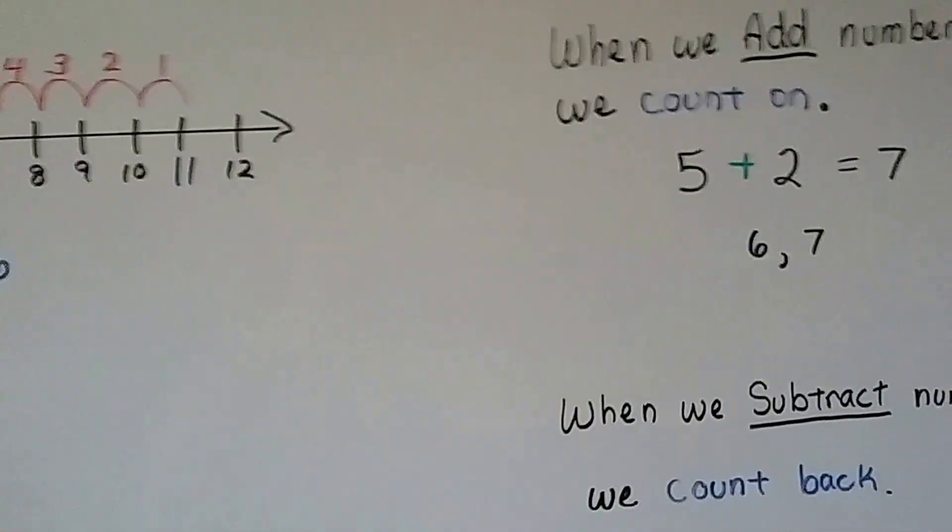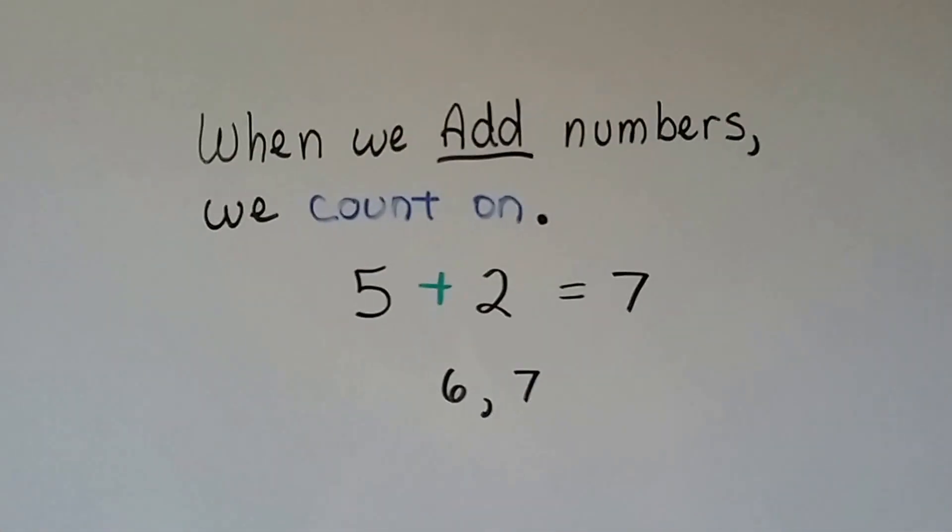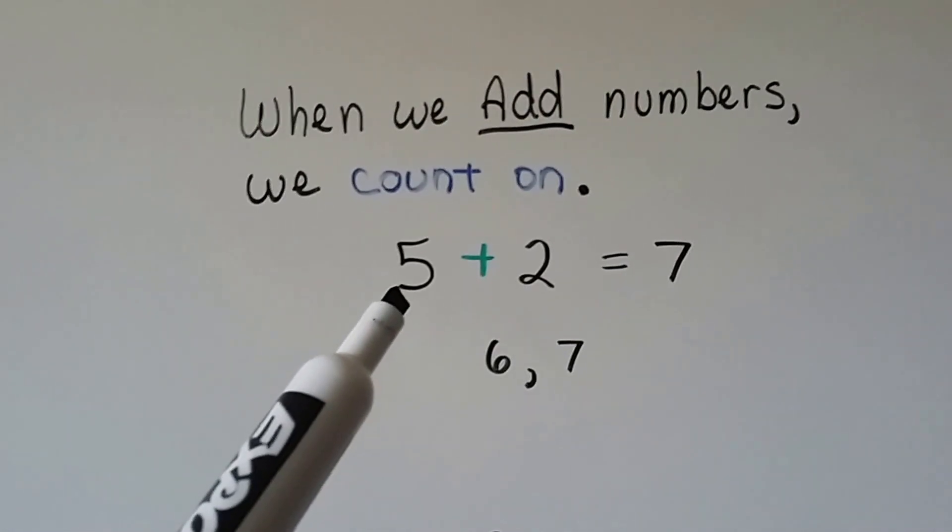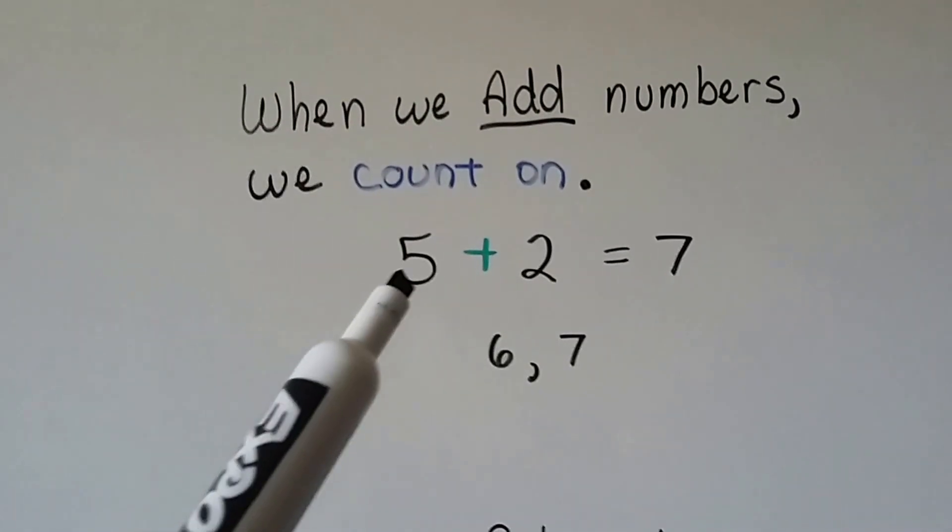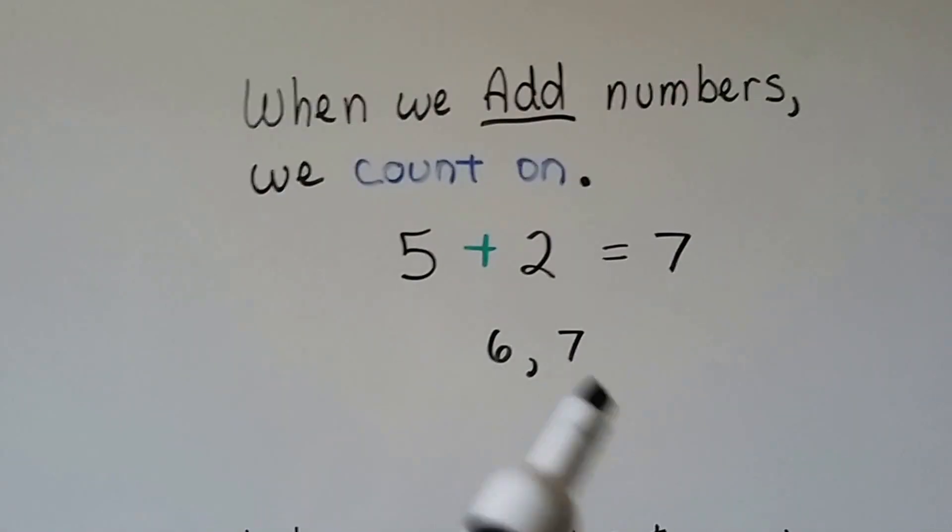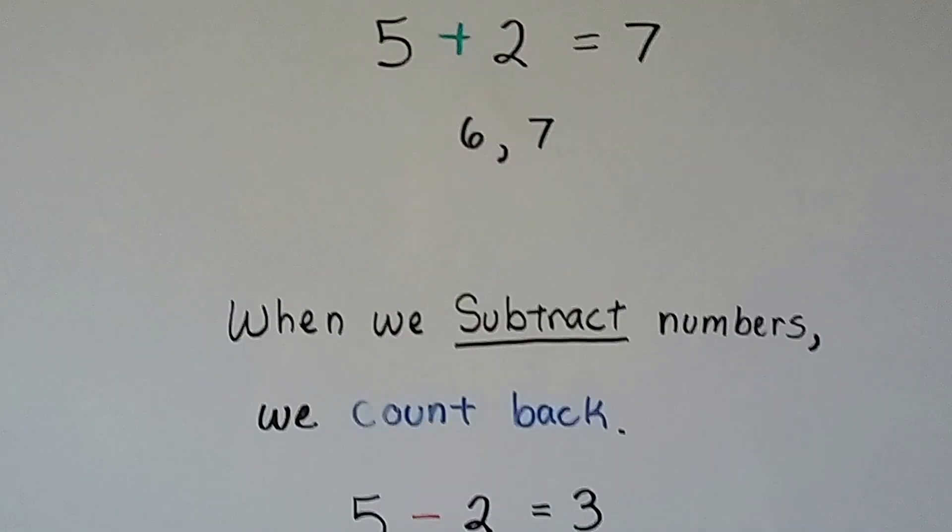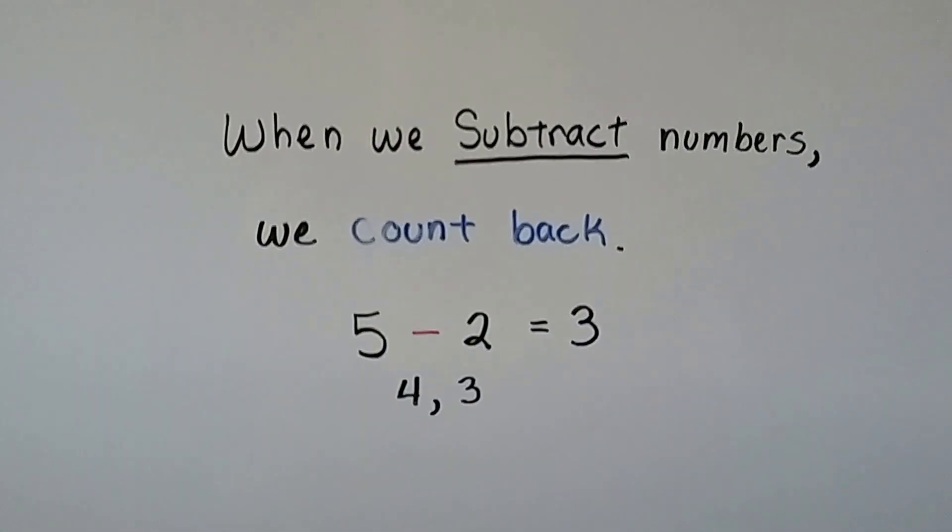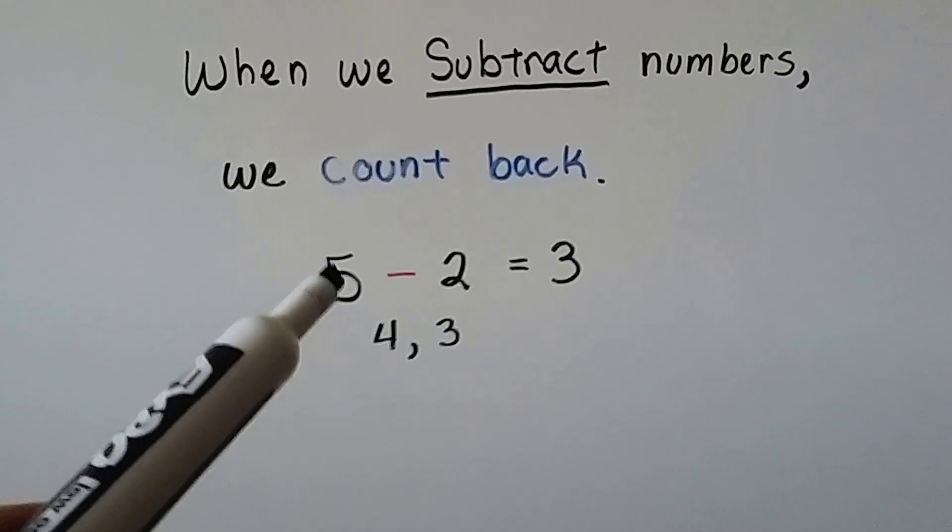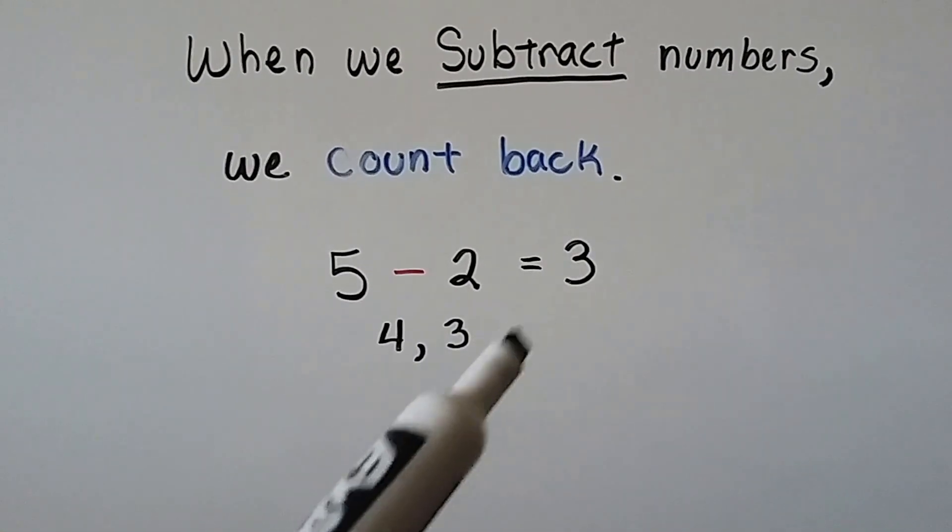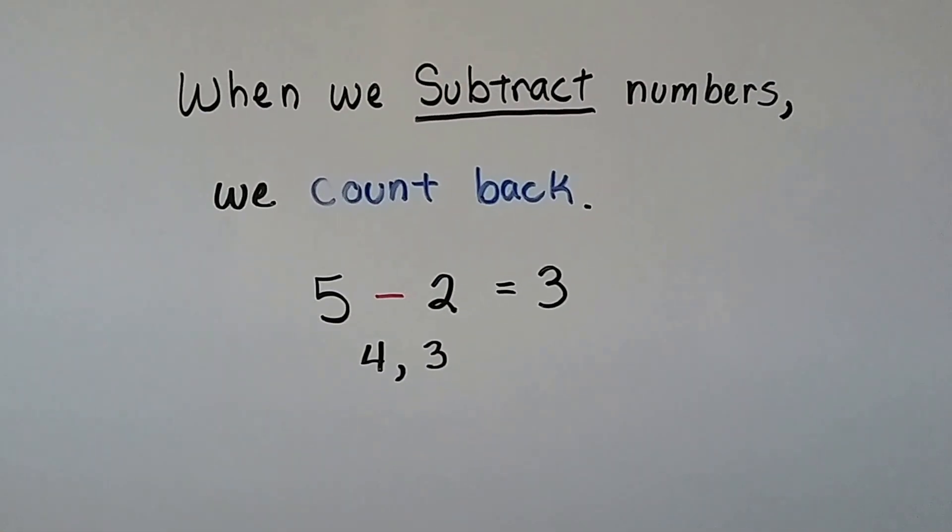When we add numbers, we count on. Do you remember we did that? We start at the 5, and then we count on 2 more. 5, 6, 7. So our sum is 7. When we subtract numbers, we count back. We start with the 5, and we count back to 5, 4, 3. And that brings us a 3 as our difference.